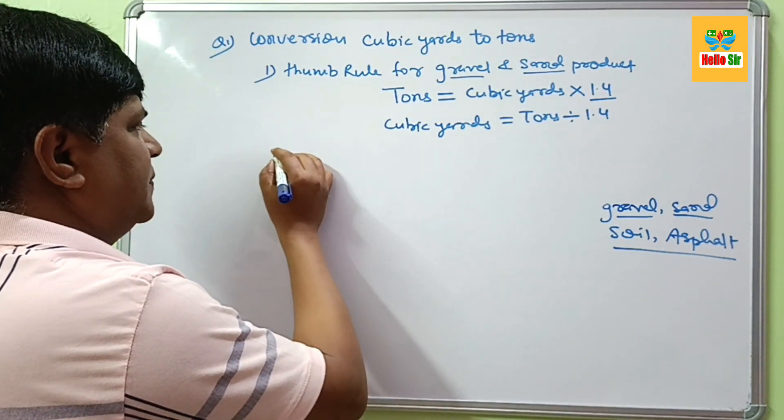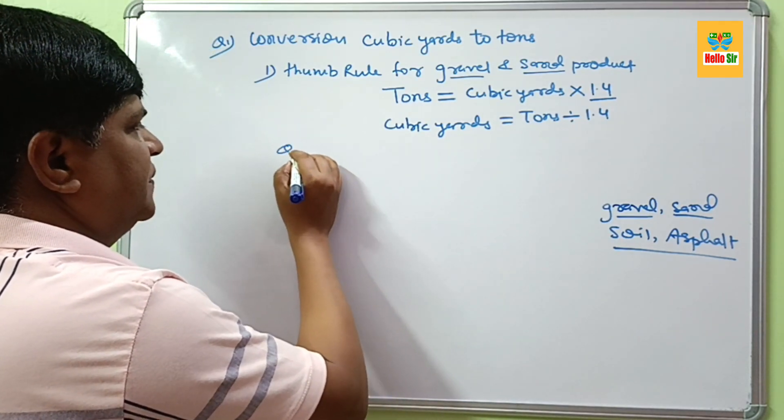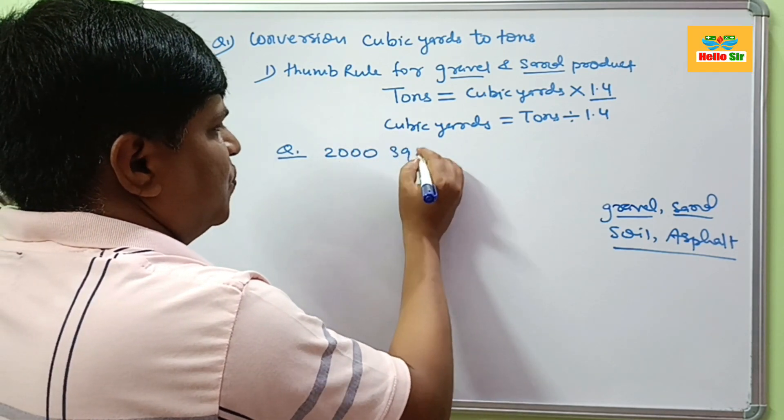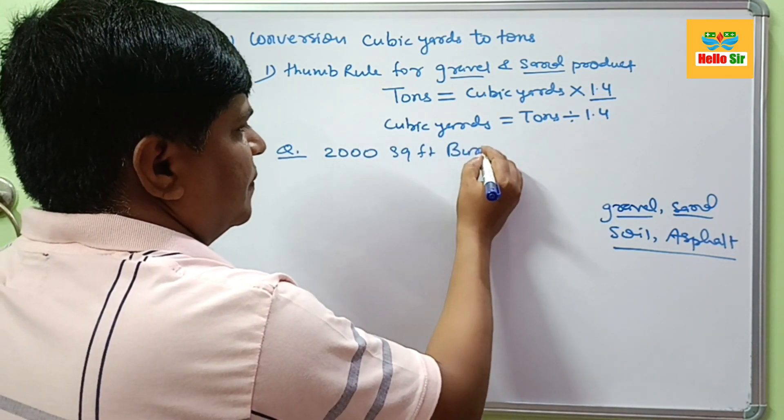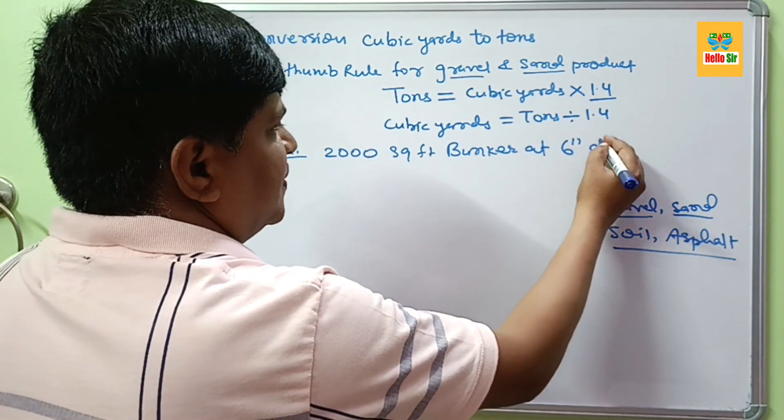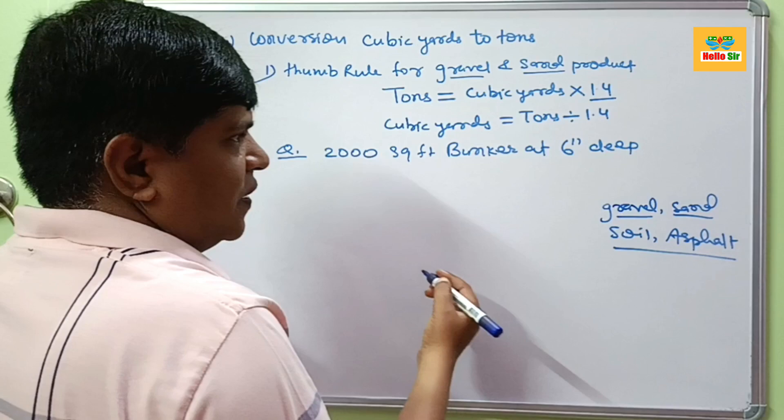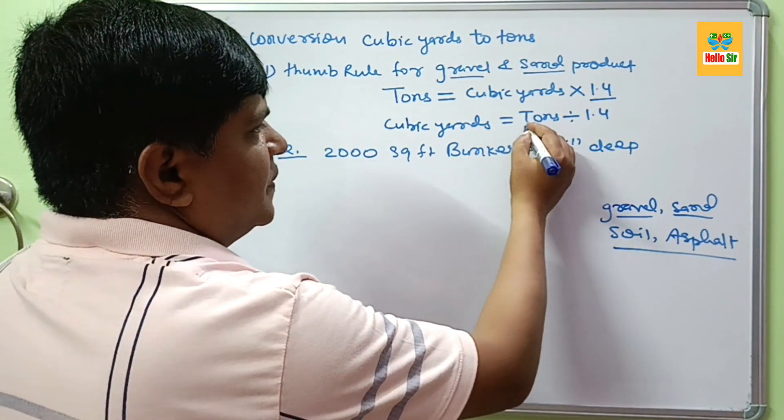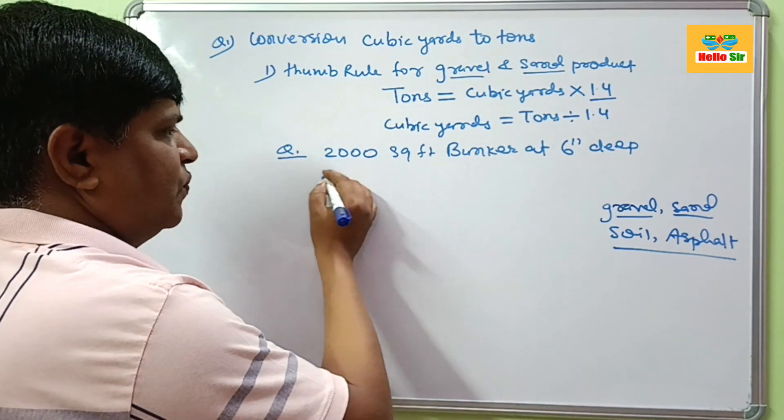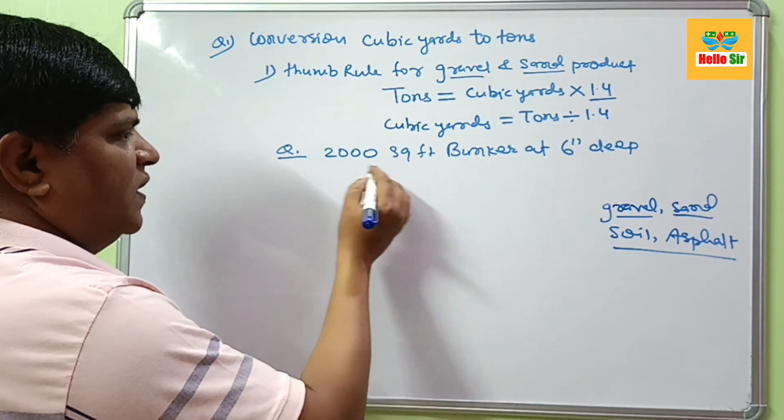Suppose you have a problem: 2000 square foot bunker at 6 inch deep. And your question is how much tons of sand will be required for this one. Very simple, do the calculation.